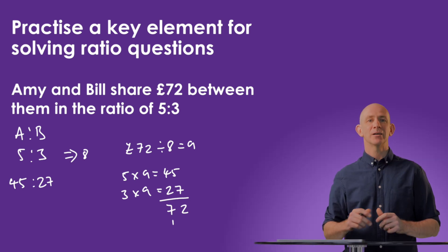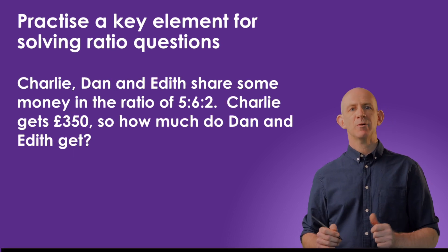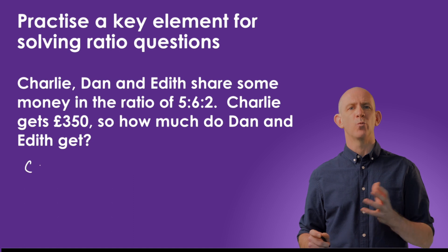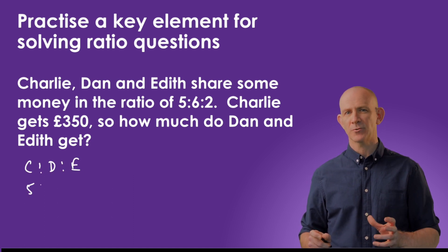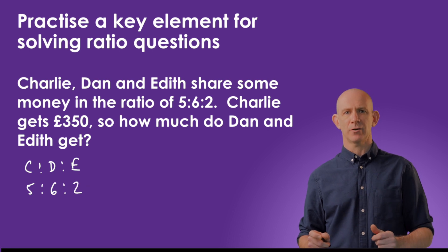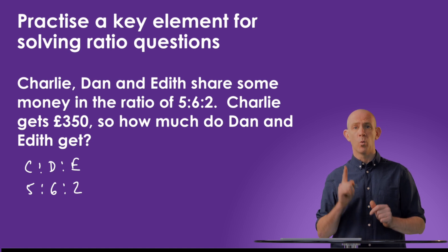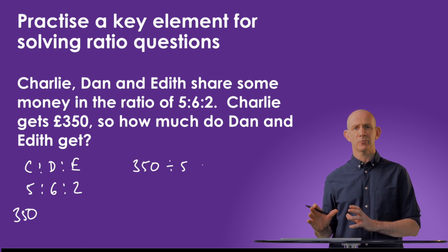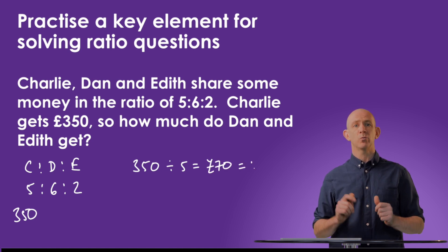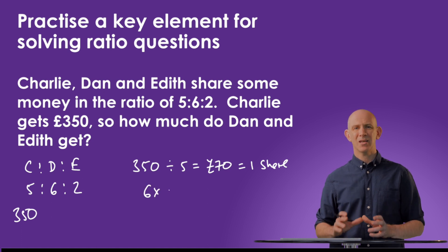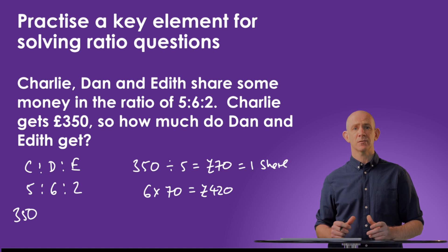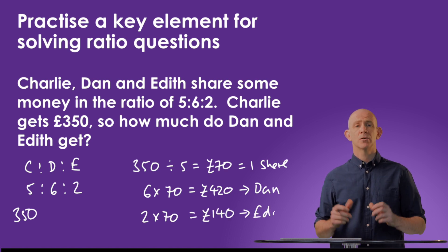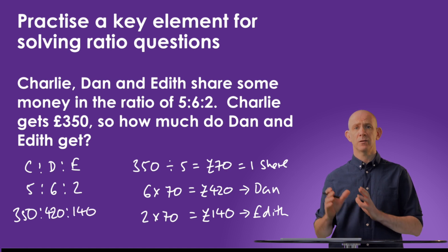The proportionality remains the same, as we are multiplying both sets of shares by the same number. Next, we have a problem where Charlie, Dan, and Edith share some money in the ratio of 5 to 6 to 2. Remember which ones have which part of the ratio: Charlie will have 5 shares, Dan will have 6 shares, and Edith will have 2 shares. The key to solving this is finding out what 1 share is worth. We know Charlie's 5 shares equals £350, so we divide 350 by 5 to find 1 share, which is £70. We then times 70 by 6 to find Dan gets £420, and times 70 by 2 to find Edith gets £140. So the final ratio is 350 to 420 to 140.